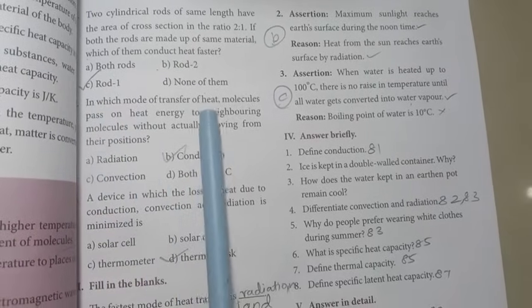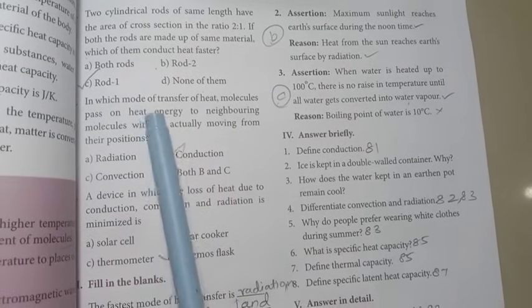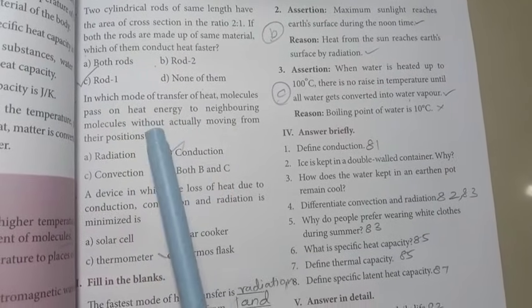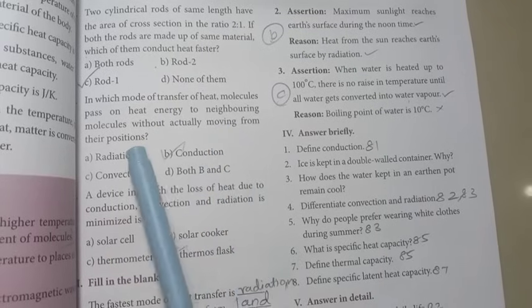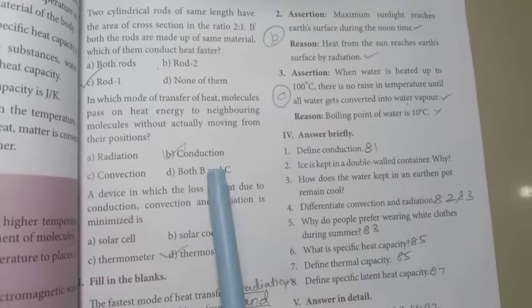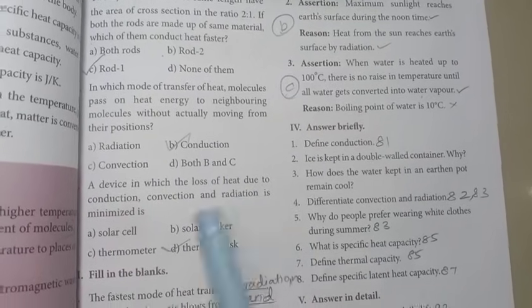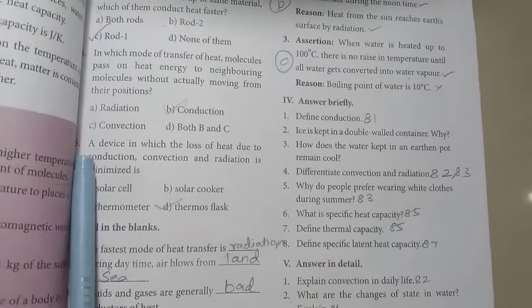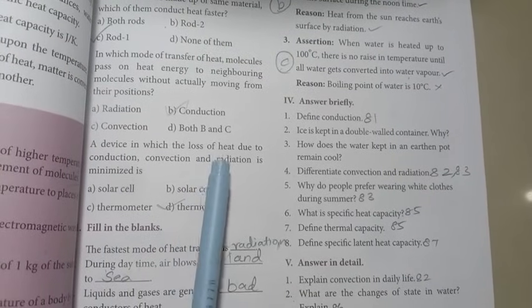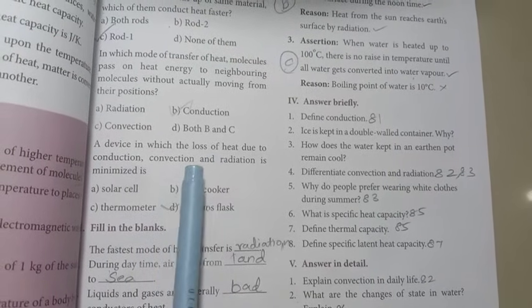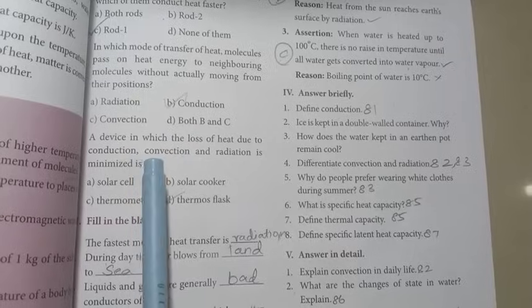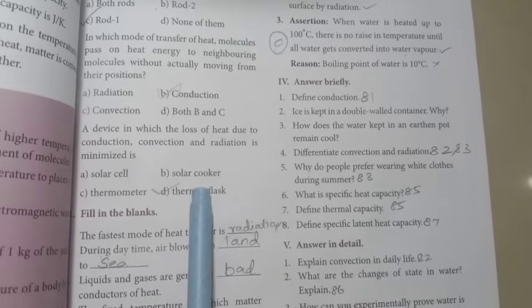Then fourth one: In which mode of transfer of heat, molecules pass on heat energy to neighboring molecules without actually moving from their positions? Answer is B option conduction. Then five: A device in which the loss of heat due to conduction, convection and radiation is minimized is D option thermos flask.